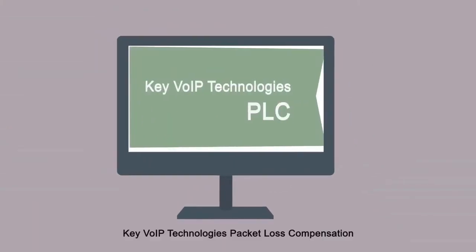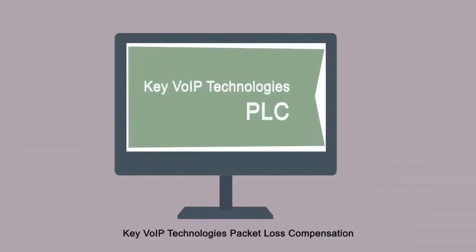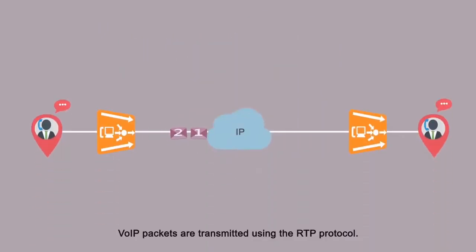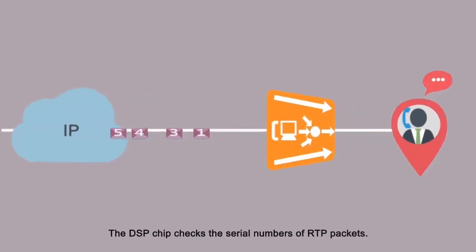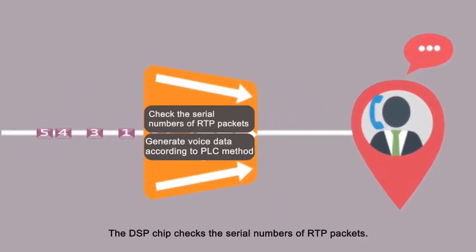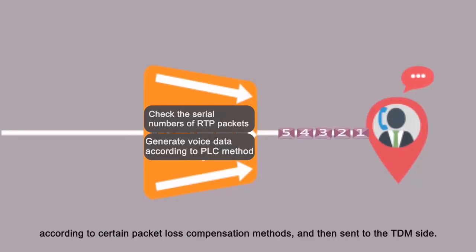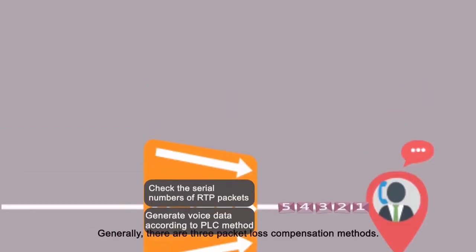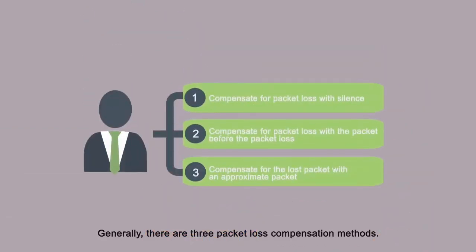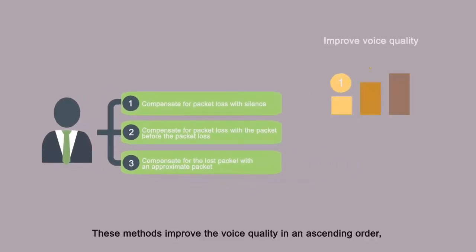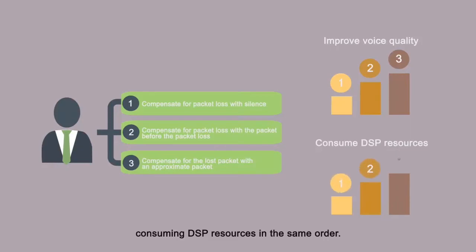Key VOIP technologies: Packet Loss Compensation. VOIP packets are transmitted using the RTP protocol. The DSP chip checks the serial numbers of RTP packets. If RTP packets are found to be lost, voice data is automatically generated according to certain packet loss compensation methods and then sent to the TDM site. Generally there are three packet loss compensation methods. These methods improve voice quality in ascending order, consuming DSP resources in the same order.